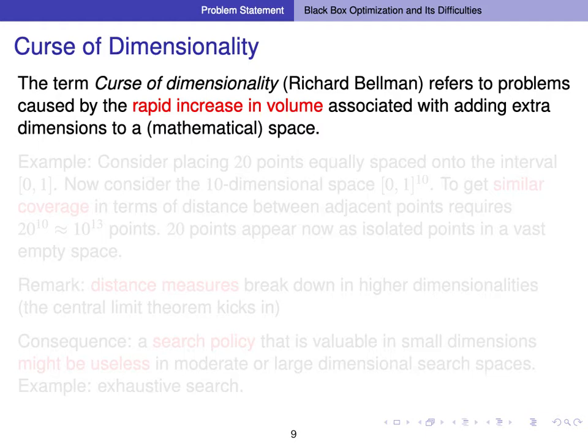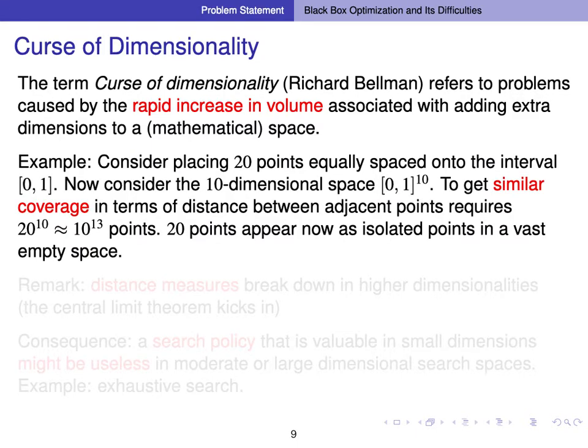The next difficulty is dimensionality. The curse of dimensionality is a well-known term referring to problems caused by the rapid increase in volume. For example, consider placing 20 points equally spaced on the interval from 0 to 1. From any point on the interval, we can find a placed point with distance less than 0.05. Now consider the 10-dimensional hypercube. To get similar coverage, we need to place 20 to the power of 10 points.